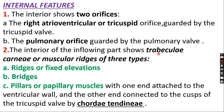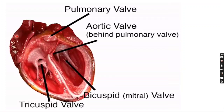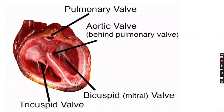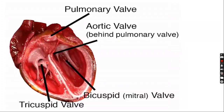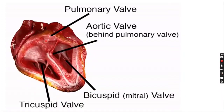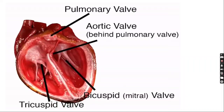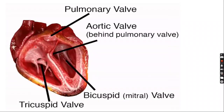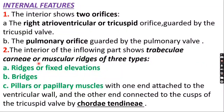Coming to the internal features: there are two orifices in the interior. One is the tricuspid orifice, also called the atrioventricular orifice, through which blood is received from the right atrium — guarded by the tricuspid valve. The other is the pulmonary orifice, through which blood is pumped into the pulmonary trunk — guarded by the pulmonary valve.